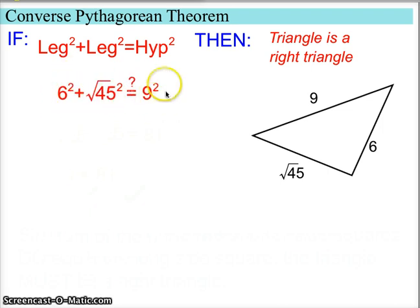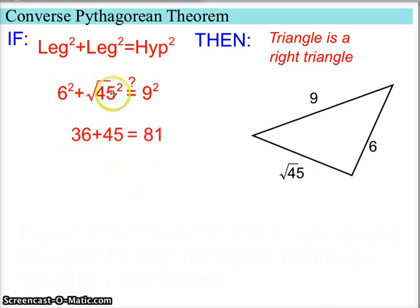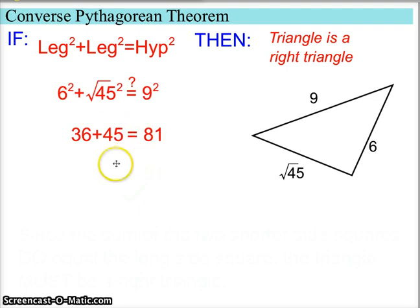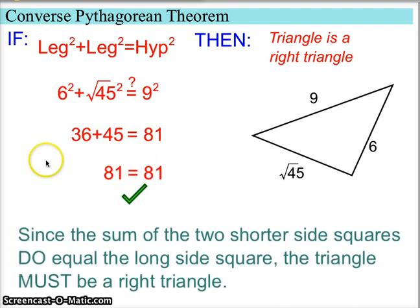We plug in: the short sides go in the leg positions and the longest side goes in the hypotenuse position. 6 squared is 36. The square root of 45, squared — remember a square root and a square cancel each other out — leaves us with 45. So 36 plus 45 equals 81, and 9 squared is also 81. Since the sum of the two shorter side squares does equal the long side squared, this triangle must be a right triangle, meaning that angle must be 90 degrees.